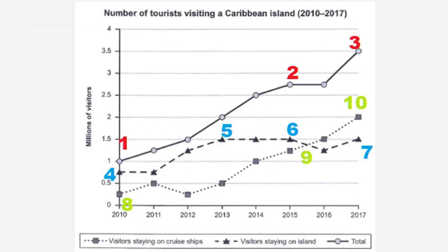I'm going to separate my data according to the lines, so I'm going to have three body paragraphs — one for each line — covered in the order of highest, middle, and lowest at the start of the period. I want to have about three to four things to say about each line. With line graphs, the start numbers and end numbers are always important. Imagine it's your bank account — the most important things would be how much money you started with and how much you ended with. It's the same with tourists: how many were there at the beginning and at the end.